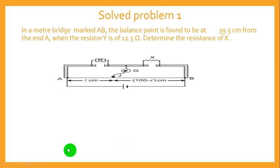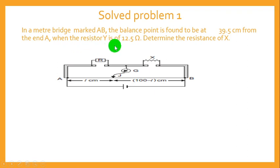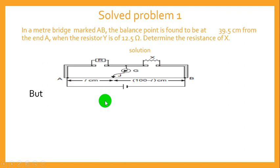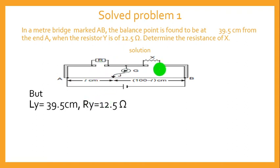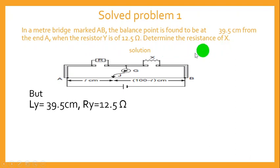The first question: In a meter bridge marked AB, the balance point is found at 39.5 centimeters from end A. The resistance Y is 12.5 ohms; determine the resistance X. From the question, LY equals 39.5 centimeters and RY equals 12.5 ohms.